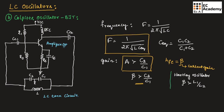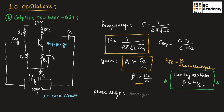You need to remember this for the Hartley oscillator. For the Colpitts oscillator's phase shift: the amplifier circuit produces 180 degrees and the feedback or tank circuit produces 180 degrees, giving an overall phase shift of 360 degrees or 0 degrees. This is the working of the Colpitts oscillator and a summary of LC oscillators. Hope you have understood the topic. Thank you.